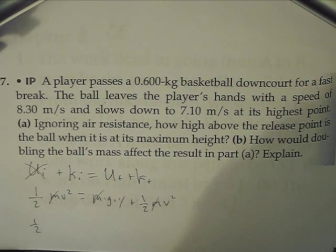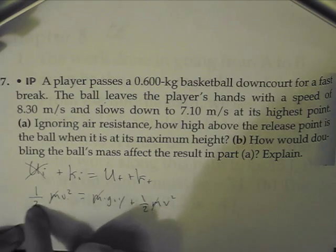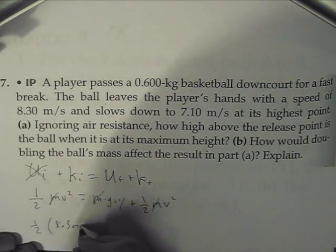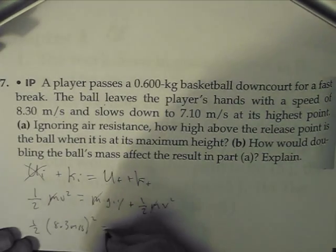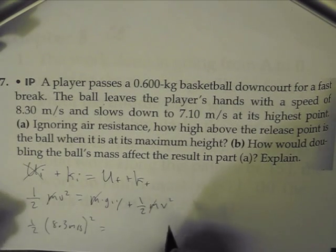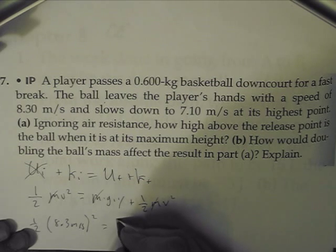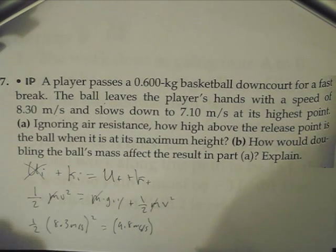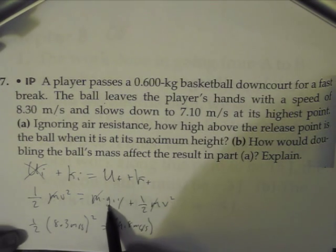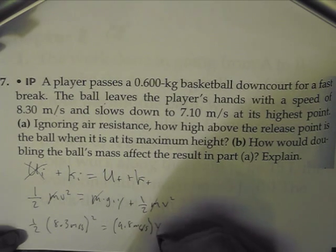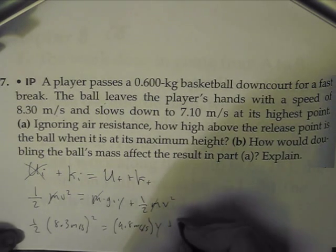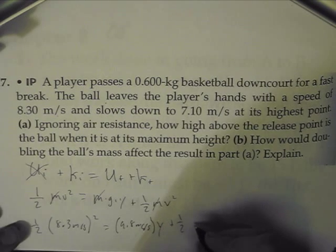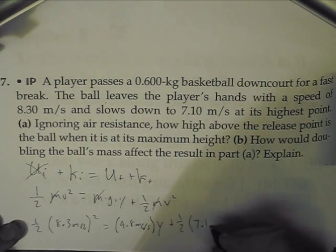Well, this side of the equation is the initial side, so initially we have 8.3 meters per second. And that's going to be squared, of course, equals mass times gravity times height. And so again we're not using mass, so gravity is going to be 9.8 meters per second squared, and height, so that would be y, plus one-half, and then the velocity on the final velocity is 7.1, so one-half times 7.1 meters per second.